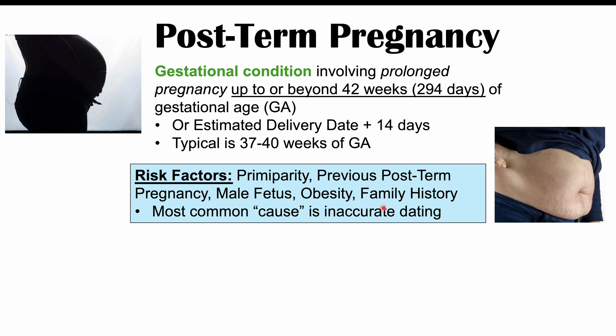The etiology or cause for post-term pregnancy isn't entirely understood. We don't know exactly why some individuals get it and some don't, but certain factors increase your risk. These include primiparity — meaning it is the first time you become pregnant — previous post-term pregnancy, carrying a male fetus, obesity, and family history. If a pregnant female has family members who have had post-term pregnancies, they are also more likely to have it themselves.